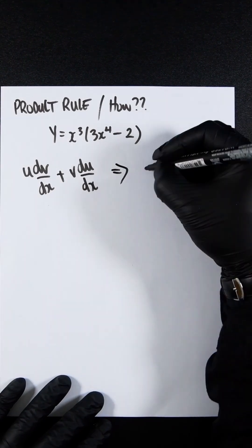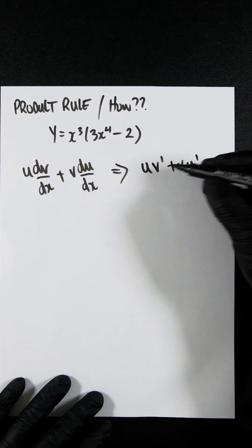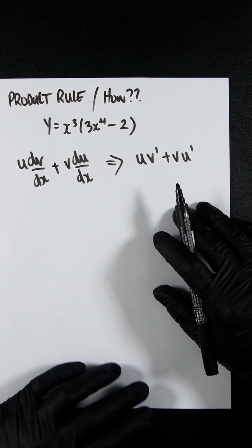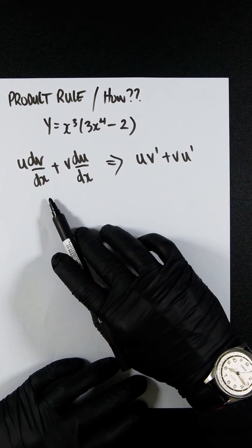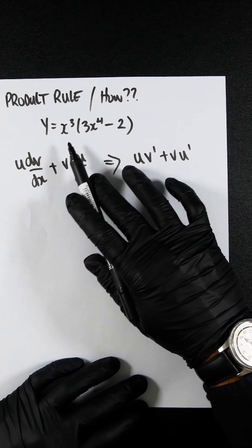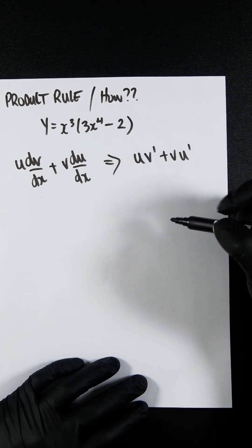This can also be represented as u v dash plus v u dash. v dash or u dash is a universal notation for showing how one term has been differentiated once. So if we differentiated u twice, then it would be u dash dash.